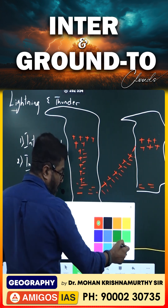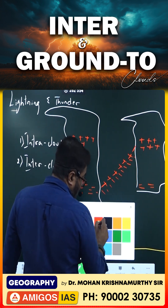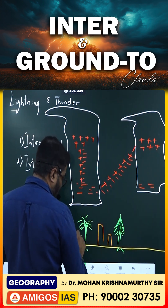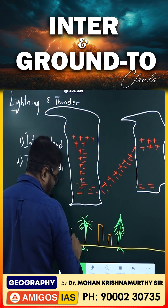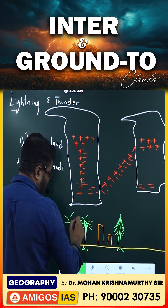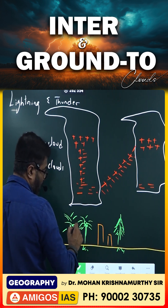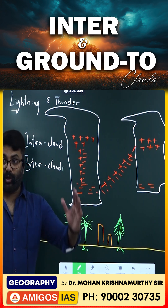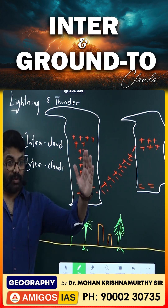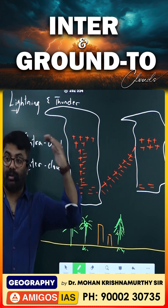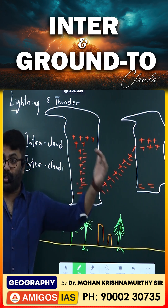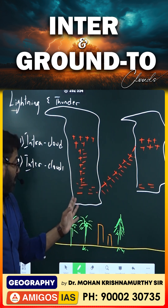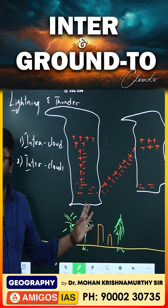The next one is ground to cloud. What happens here? We have tall trees — coconut trees and all — placed next to one another. Usually, normally, we prefer to plant trees far from each other so that the branches don't touch each other. 20 feet minimum distance we maintain.